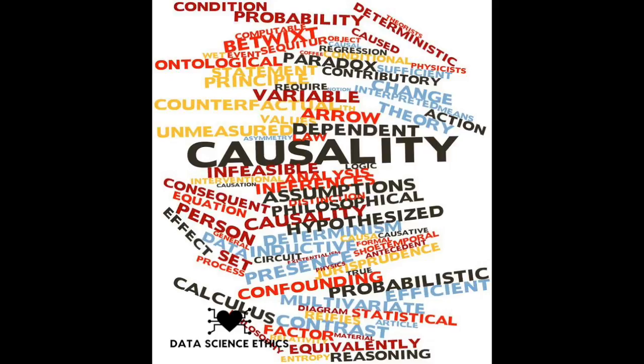Many fields use proxy variables to great effect. For instance, think about the measurement of health. Health is another difficult concept to pin down — there are so many aspects to it. Yet the healthcare field uses all sorts of proxy variables, like blood pressure, BMI, resting heart rate, and any number of lab tests. None of these is a direct measure of health; instead, they are all proxy variables for aspects of it.